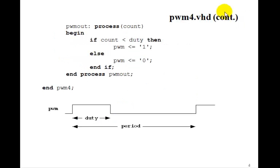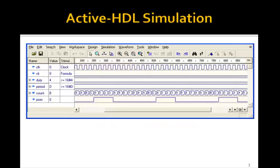And then the output PWM will just be one if count is less than duty, else PWM is zero. So that's how we'll make the PWM signal. And let's simulate it to see if it works.